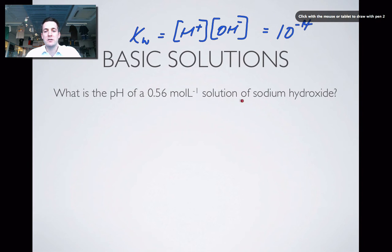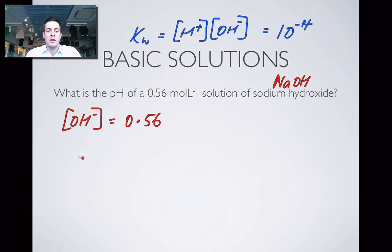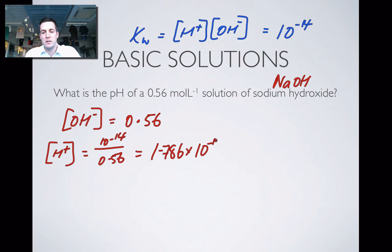So here we've got a 0.56 mole per liter solution of sodium hydroxide. Sodium hydroxide is a strong base, strong electrolyte, so we're going to get one mole of hydroxide ions for every mole of sodium hydroxide, and our concentration of OH- is going to be 0.56. So my concentration of H+ is going to be 10 to the minus 14 divided by that. So 10 to the minus 14 over 0.56. And what does that equal? That equals 1.786 times 10 to the minus 14.